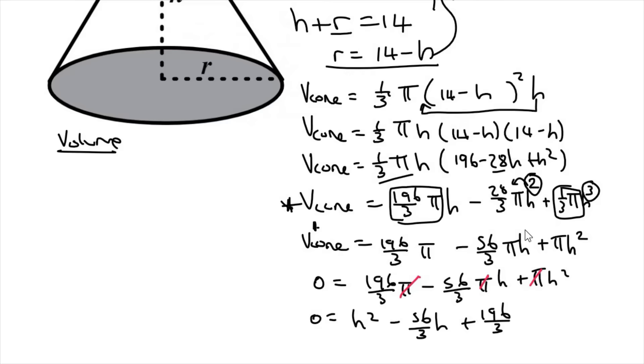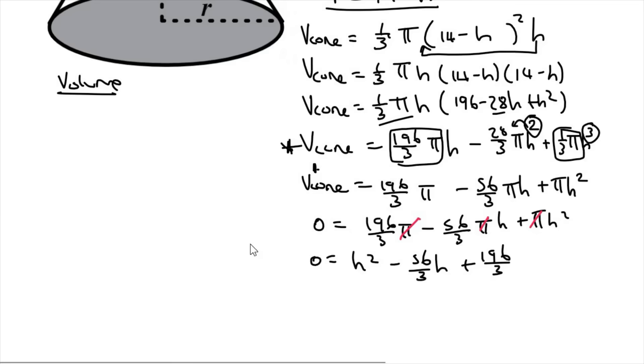I wouldn't use decimals because you lose a lot of your accuracy. I would keep it as 56 over 3, 196 over 3, and h. If you wanted to, though, you could get rid of the denominators by timesing everything by three. So it'll be zero equals to 3h squared minus 56h plus 196.